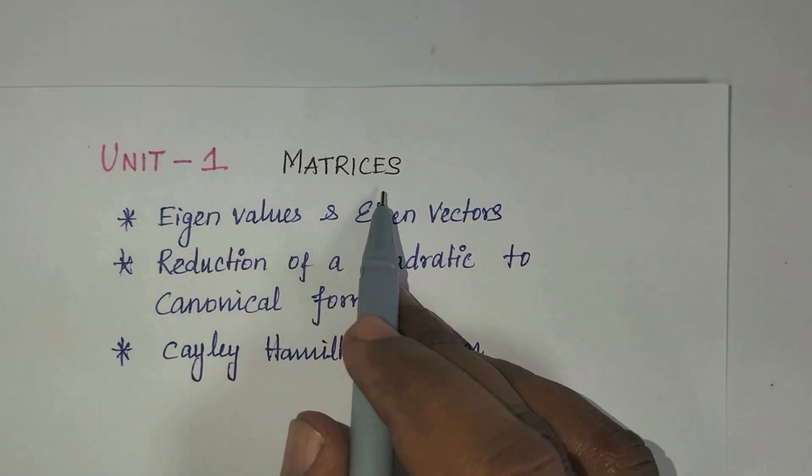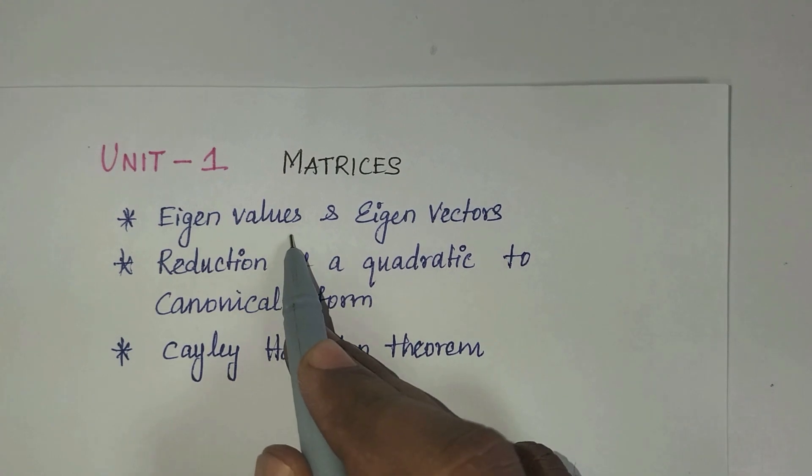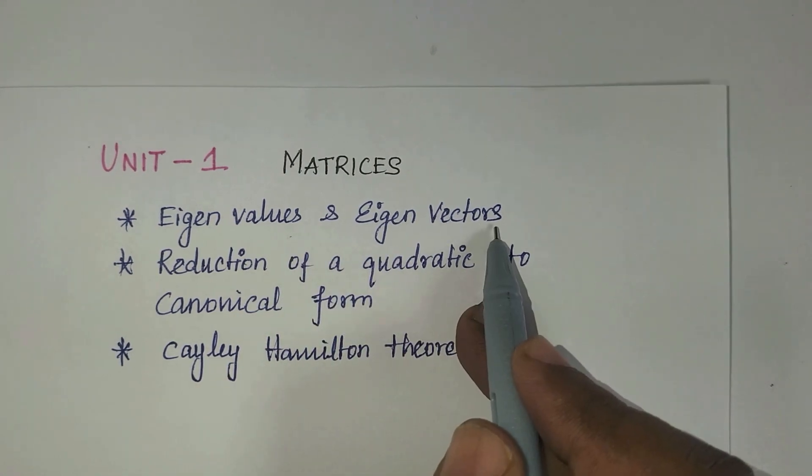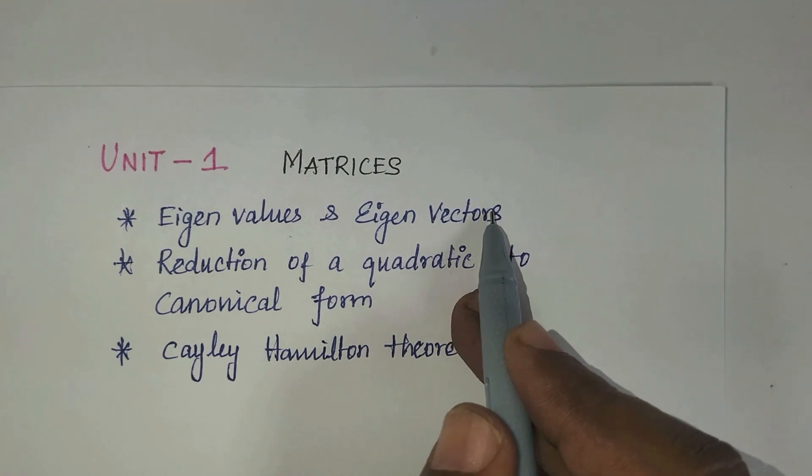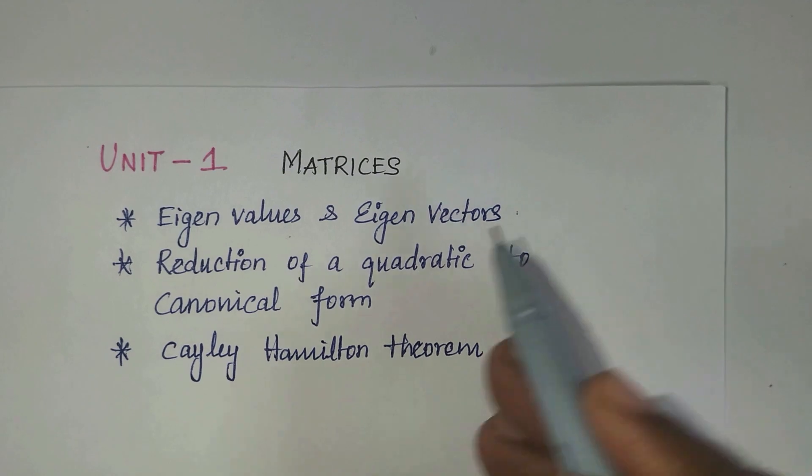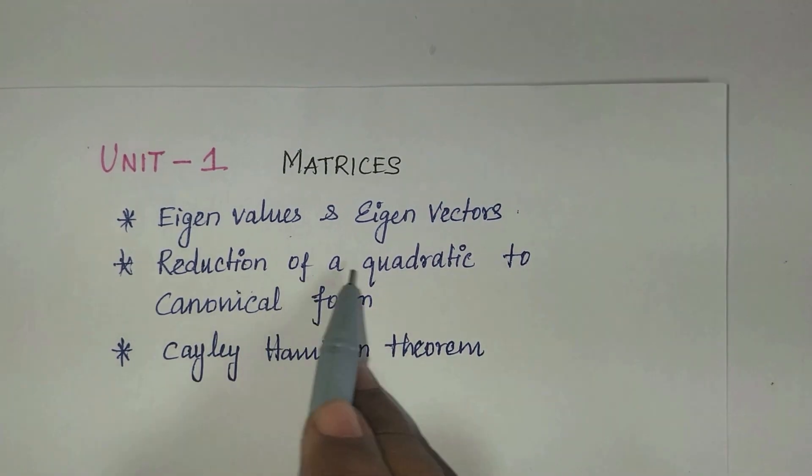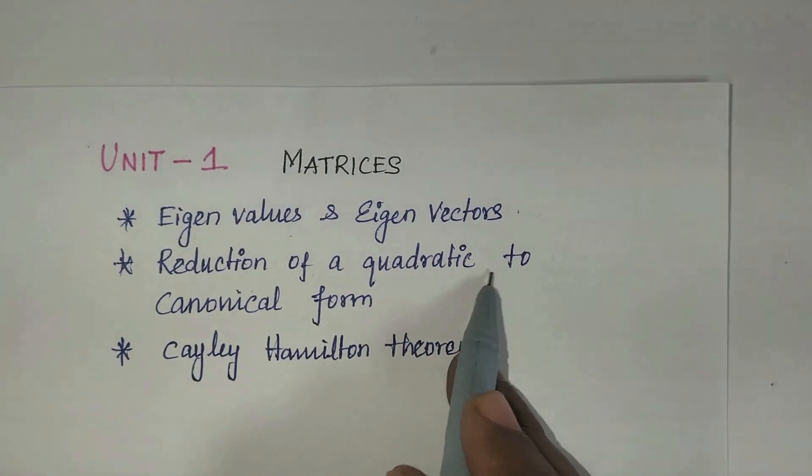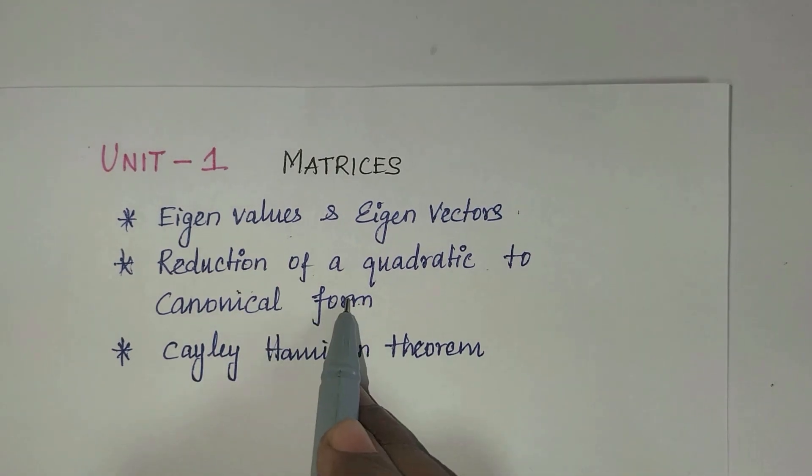In Unit 1, you already know that there are matrices. In that section, if you know eigenvalues and eigenvectors, there are four types. If you know that concept, you can attend one 8-mark question or one 16-mark question.